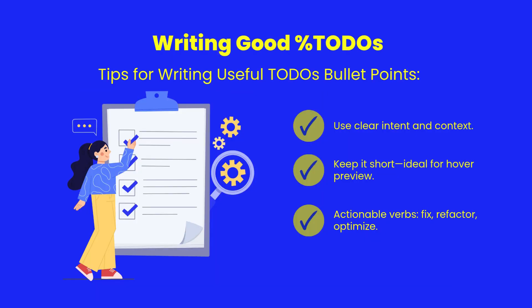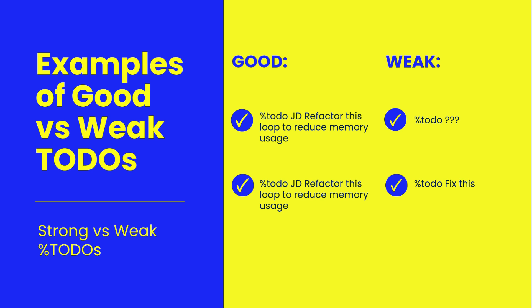When writing a percent TODO, first use clear intent and context — say exactly what the issue is and where. Next, keep it short; this makes it readable in hover previews and editor tooltips. Finally, use actionable verbs like fix, refactor, or optimize so the next steps are obvious. Avoid vague entries — be specific. Your future self and your teammates will thank you.